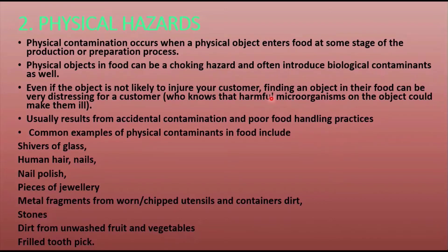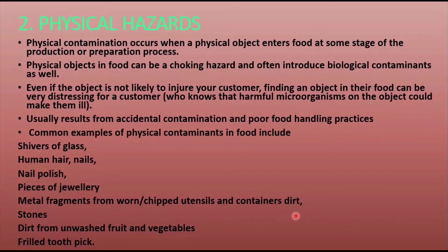Here are some examples of physical contaminants that can contaminate our food: shivers of glass, human hair, nails, nail polish, pieces of jewelry, metal fragments from worn or chipped utensils and containers, dirt and stones from unwashed fruits and vegetables, and frilled toothpicks. These are common examples of physical contaminants that we often observe.